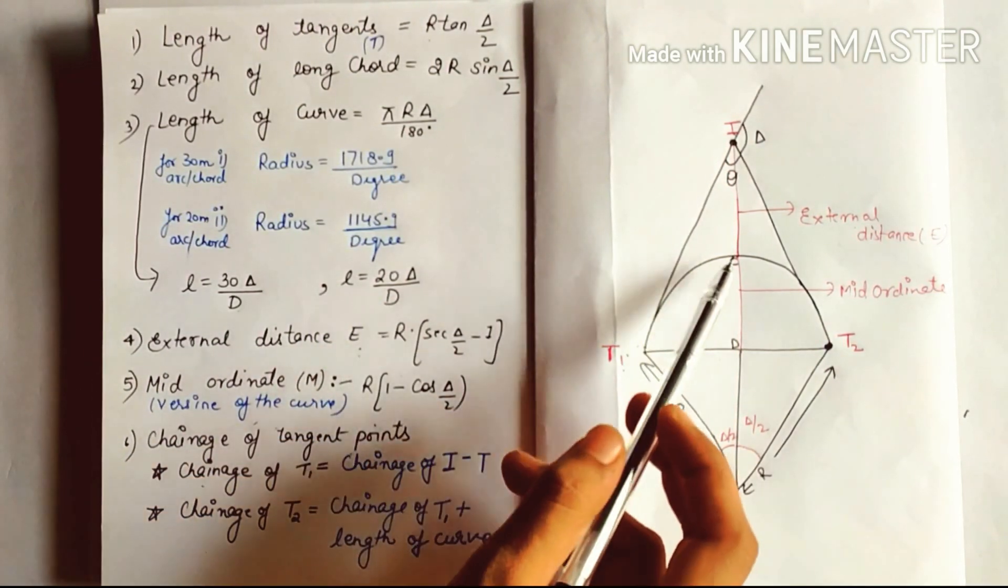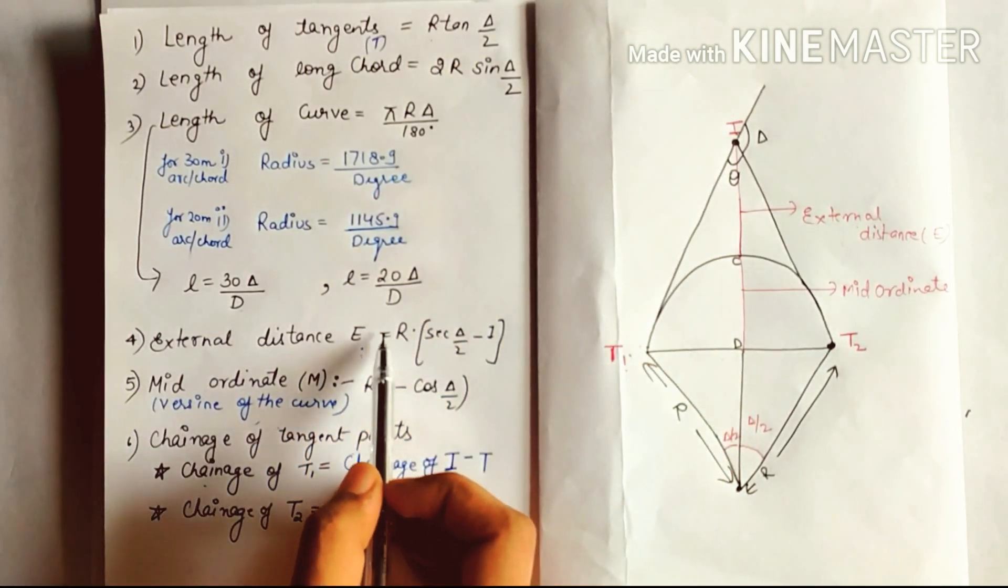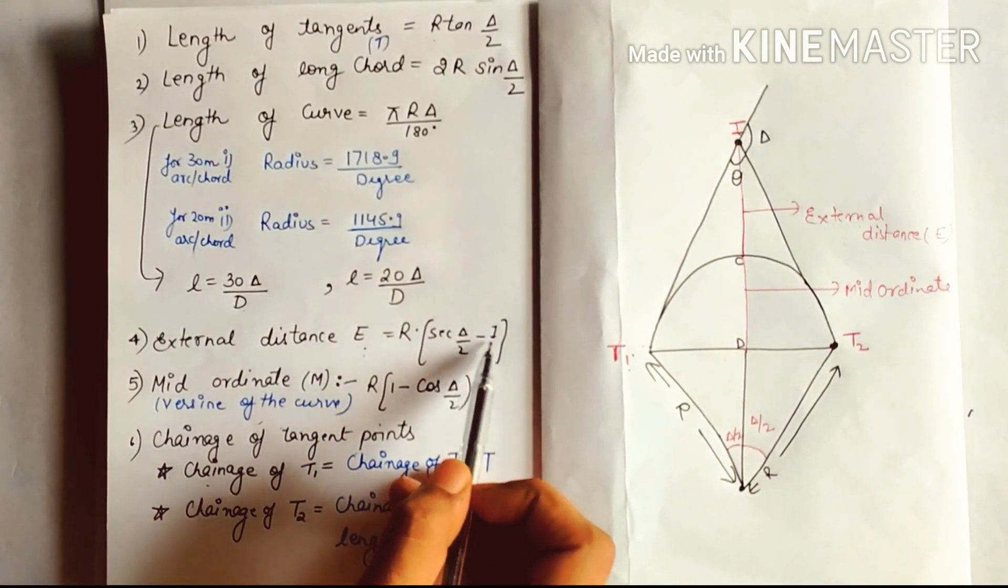External distance E, the formula is R × (sec(Δ/2) - 1).